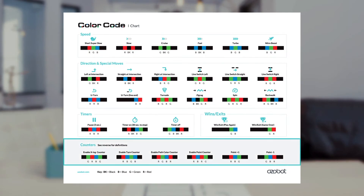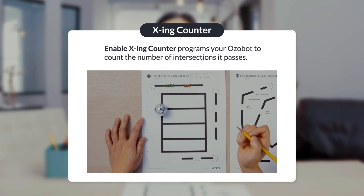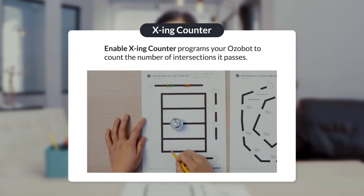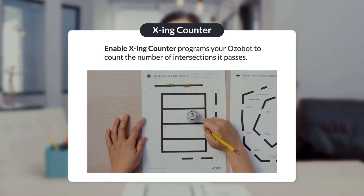First, remember the number five — you'll see why in a minute. Let's start with a brief overview of the counter codes. Look at the counter section of your color codes chart. The enable crossing counter programs your Ozobot to count the number of intersections it passes. When it passes five intersections, it stops.